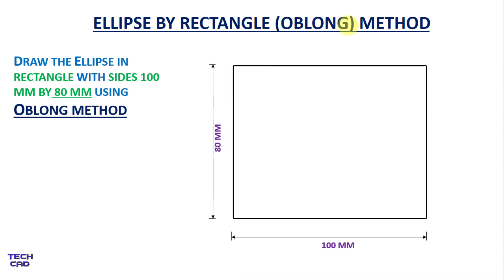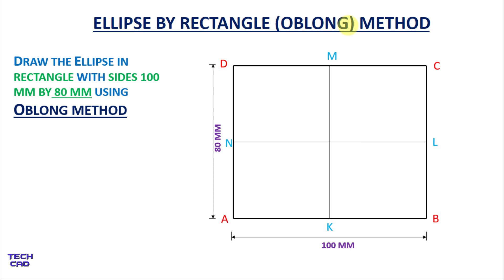Name the rectangle as ABCD. Now divide this rectangle into two equal divisions by making the midpoint of AB and midpoint of CD, joined like this, and name it as MK. Again take a midpoint of AD and BC, join with a line, and mark it as NL. Give the name O as the center of your rectangle.